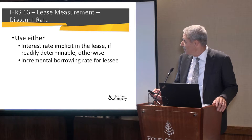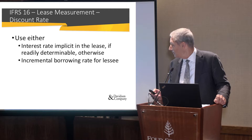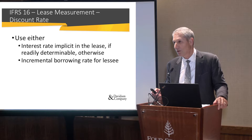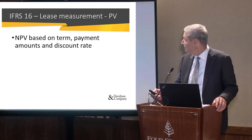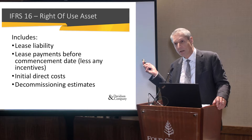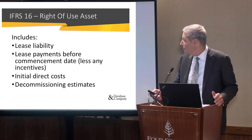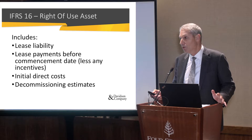For the discount rate, you have an option: either the rate implicit in the lease, which is often very difficult to determine, or alternatively the incremental borrowing rate. We see the latter more often, and there are more examples in other companies' financial statements for guidance. Sometimes we go to the valuation side to get appropriate incremental borrowing rates. The net present value based on the term is then recorded as a right-of-use asset. On day one, your liability will equal your asset. That asset typically includes the lease liability, any lease payments made before lease commencement, any initial direct costs, and any decommissioning estimates — all of those components drive your right-of-use asset.